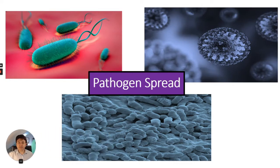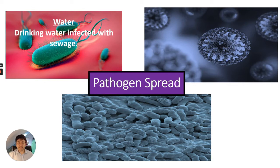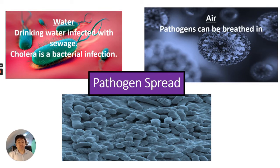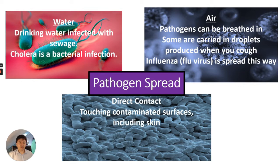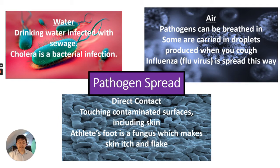How are pathogens spread? Firstly, through contaminated water — for example, drinking water infected with sewage. Cholera is a bacterial infection spread this way. Pathogens can also be spread through air, carried in droplets when you cough; influenza is spread this way. And through direct contact, such as touching contaminated surfaces including skin. Athlete's foot is a fungus spread from shower floors and towels.